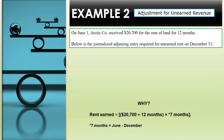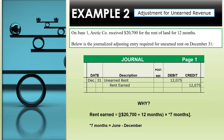Let's look at another one. Example 2: This is an adjustment for unearned revenue. On June 1, Arctic Company received $20,700 for the rent of land for 12 months. Below is the journalized adjusting entry required for unearned rent on December 31st. On December 31st, we're going to debit unearned rent in the amount of $12,075. The credit is to the rent earned account in the amount of $12,075.